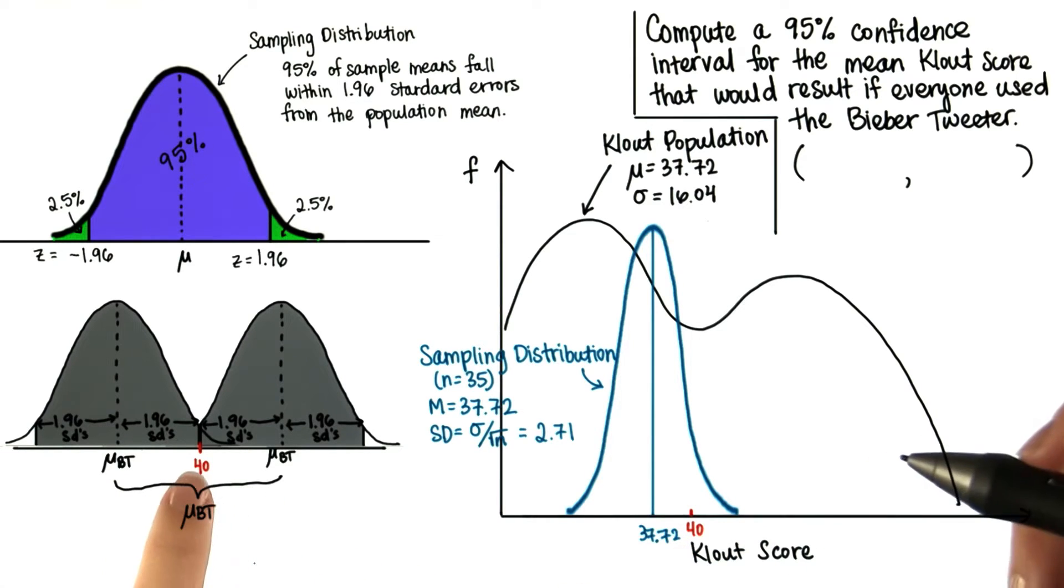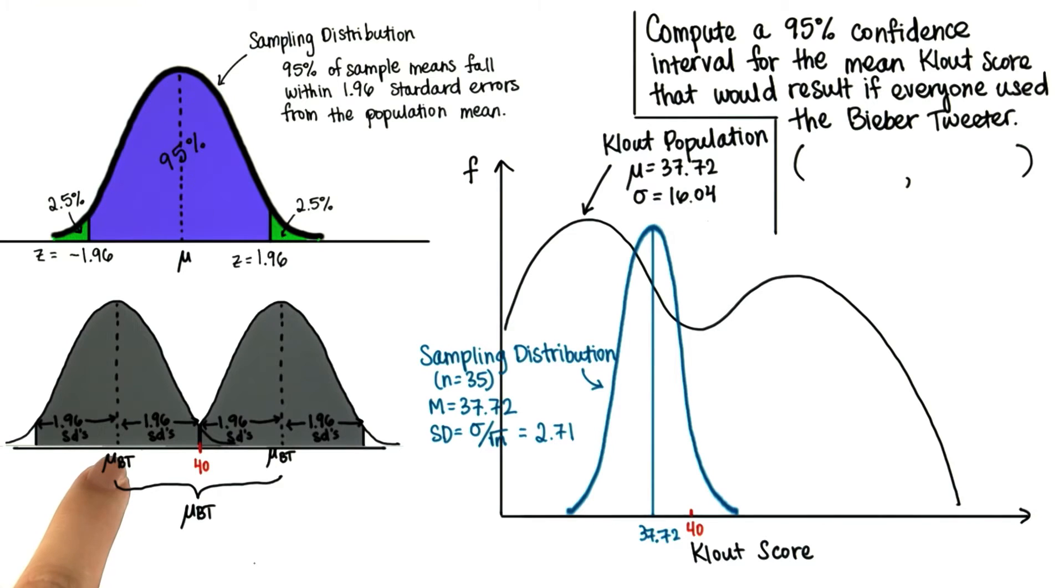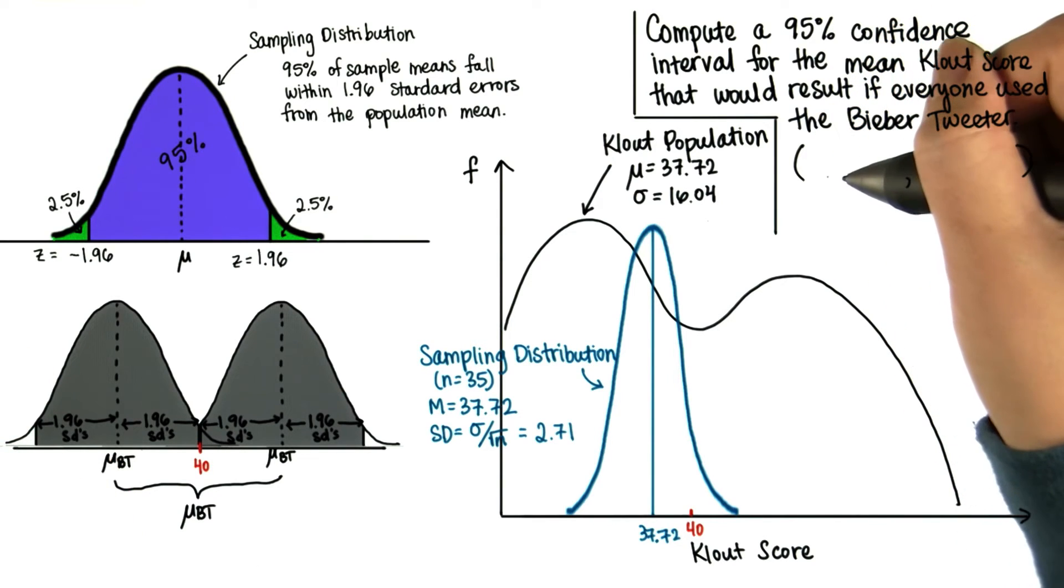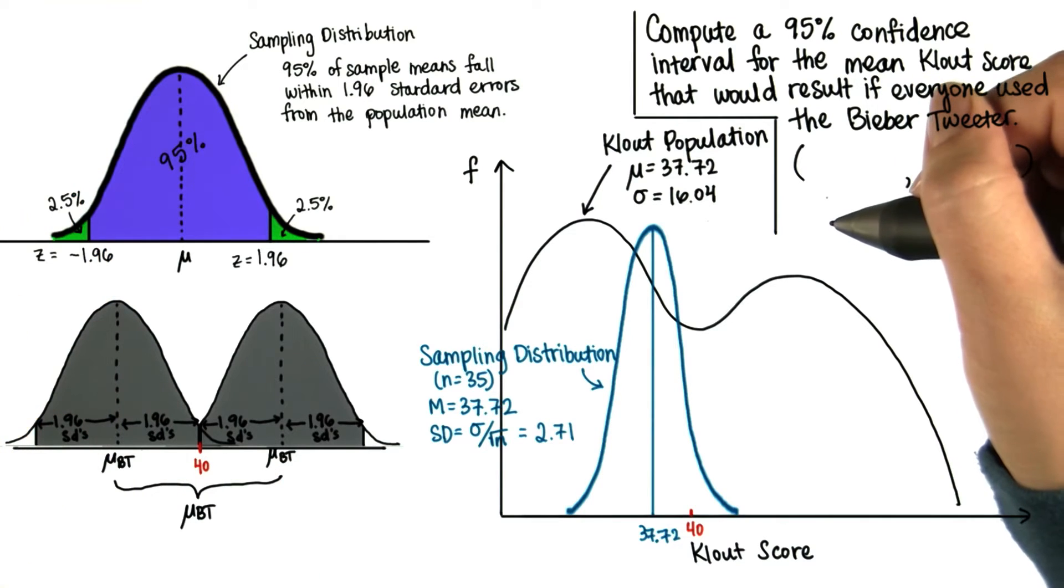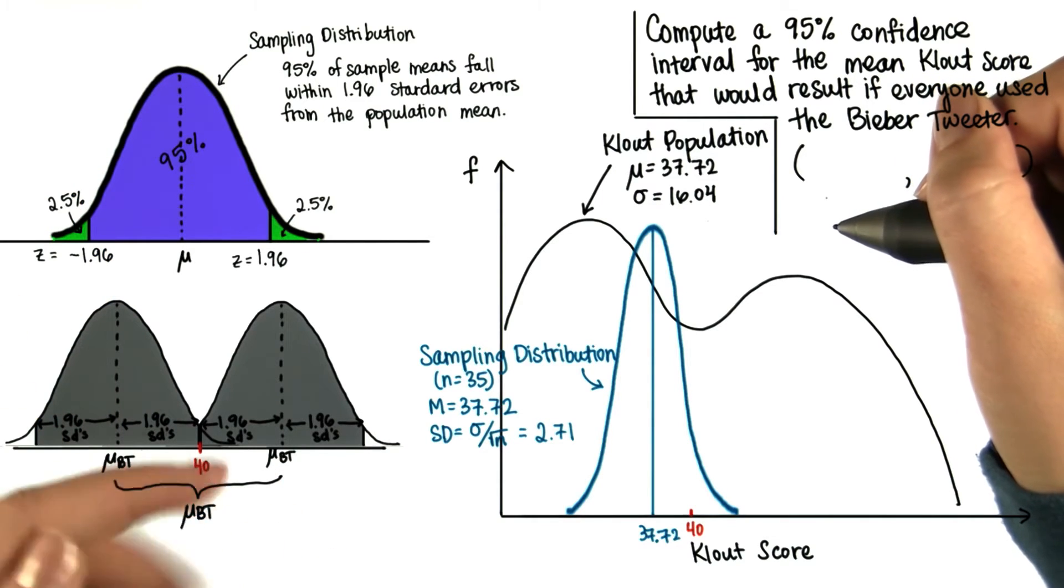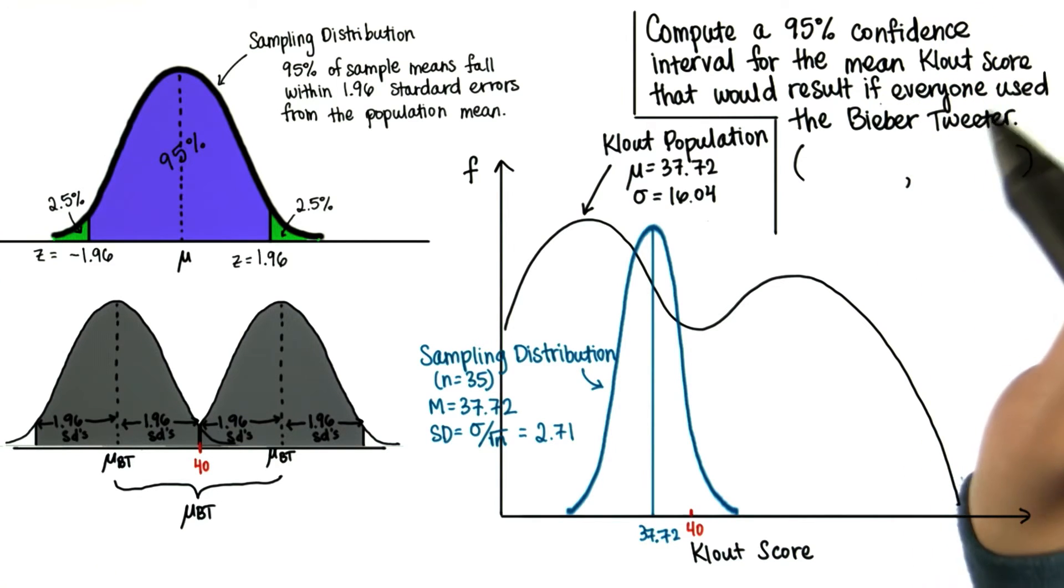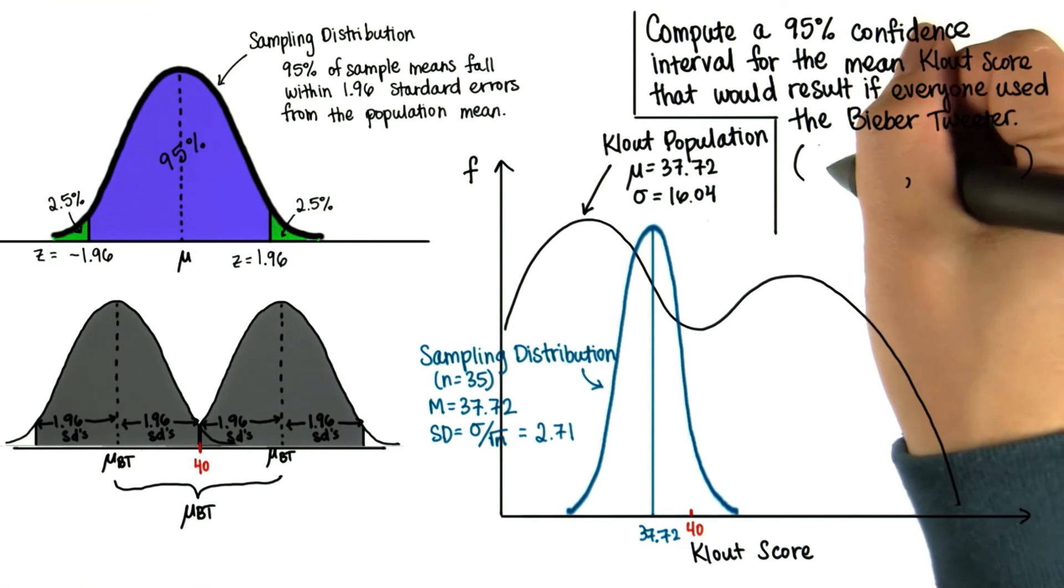So, you see that this range is 40 plus 1.96 standard deviations and 40 minus 1.96 standard deviations. And we know that since this is the same shape as our sampling distribution, that our standard deviation is the population standard deviation divided by the square root of n. I know I just said a lot of confusing things, so let's write it out.